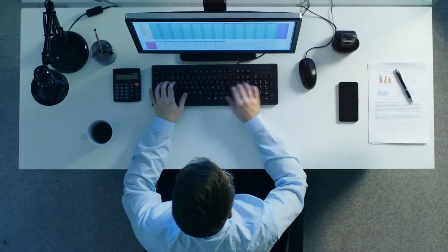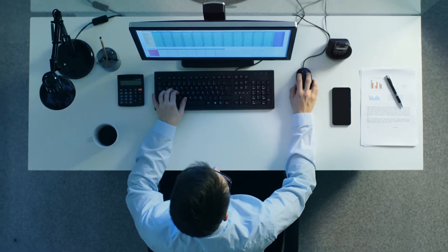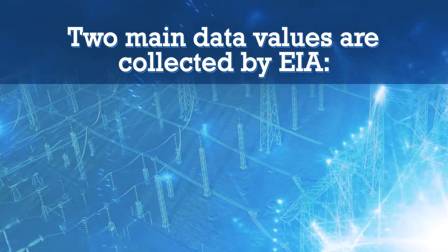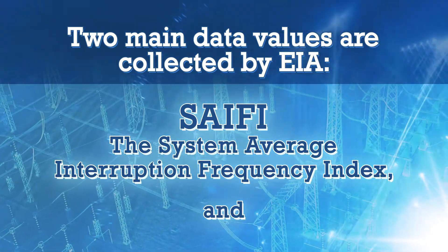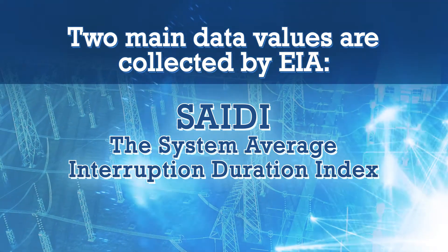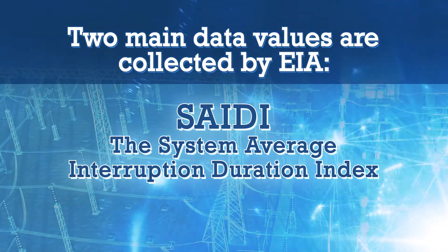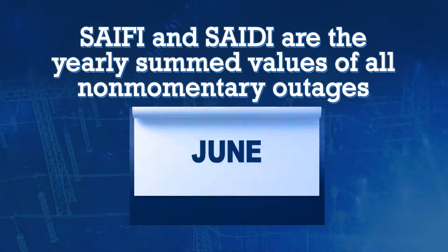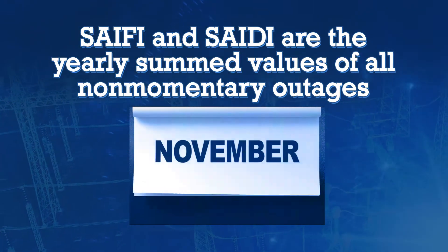EIA, or the U.S. Energy Information Administration, assembles data from all utilities which calculate these metrics. EIA also inquires whether or not IEEE standards are being followed. Two main data values are collected by EIA: SAIFI, the System Average Interruption Frequency Index, and SAIDI, the System Average Interruption Duration Index.